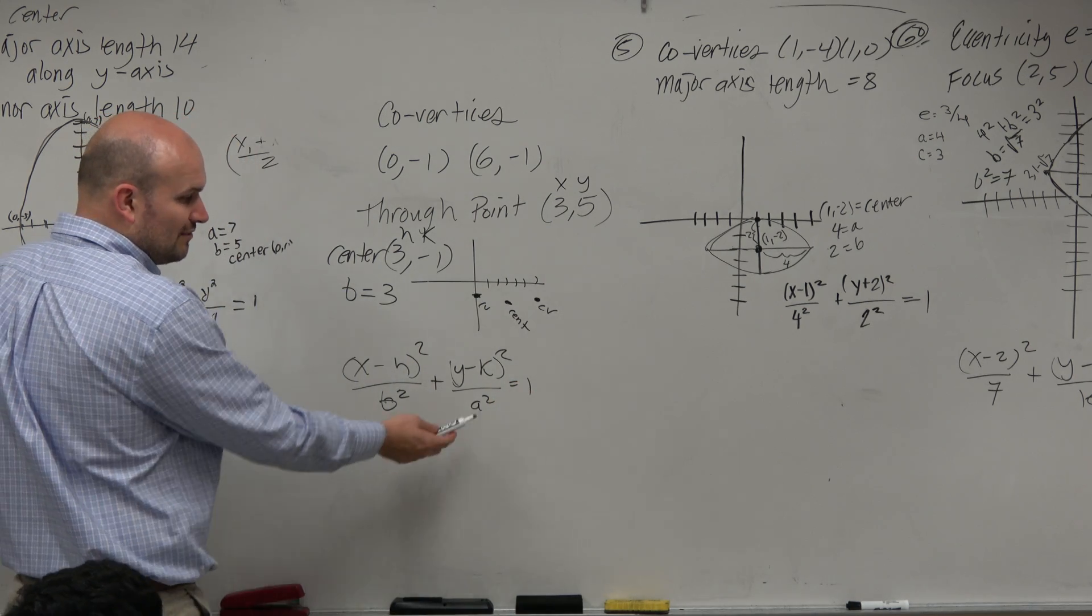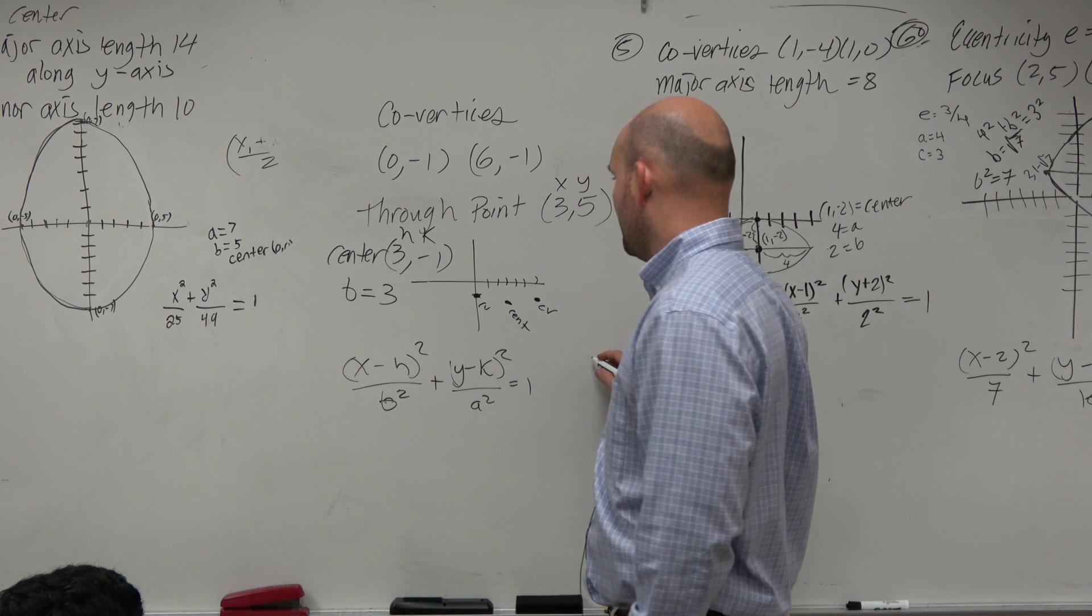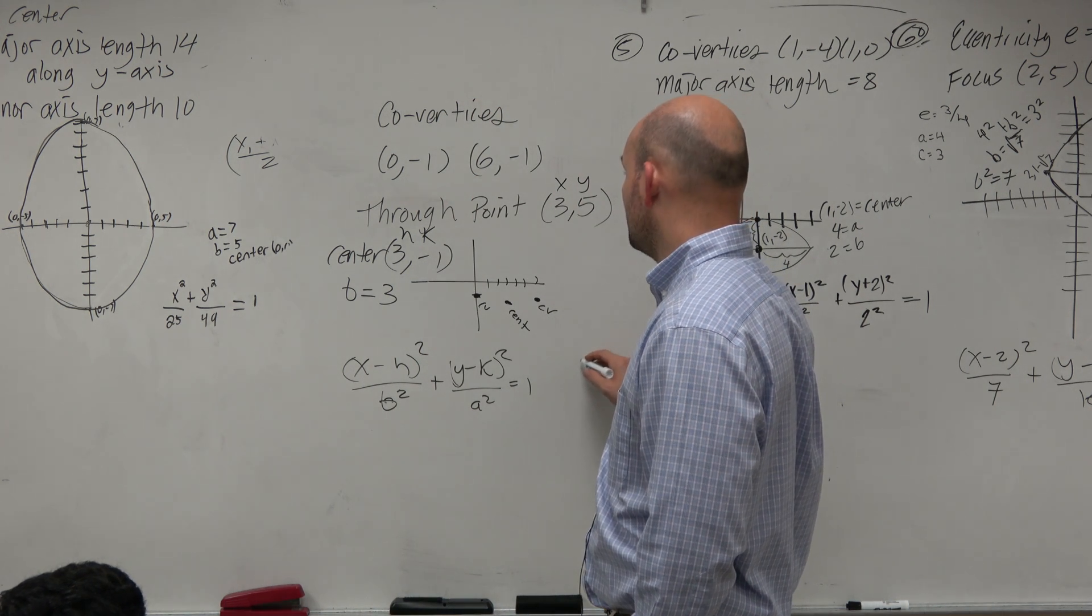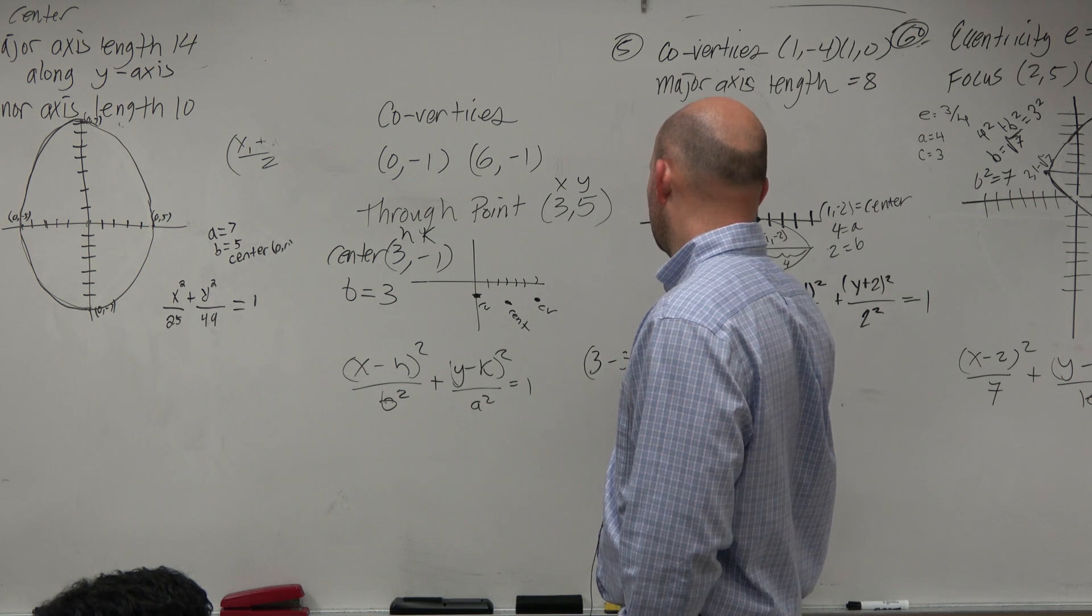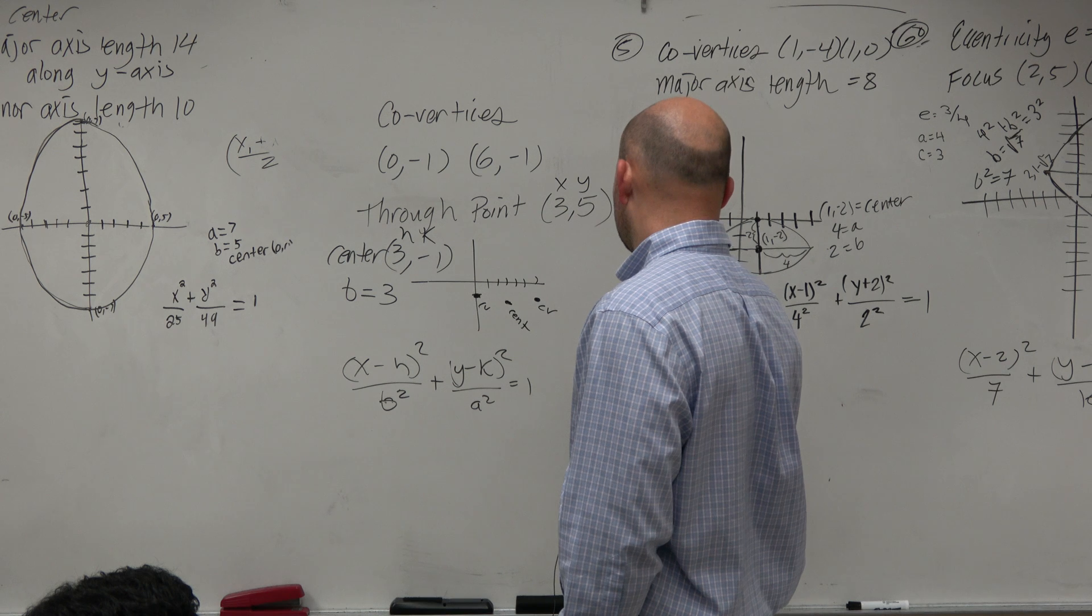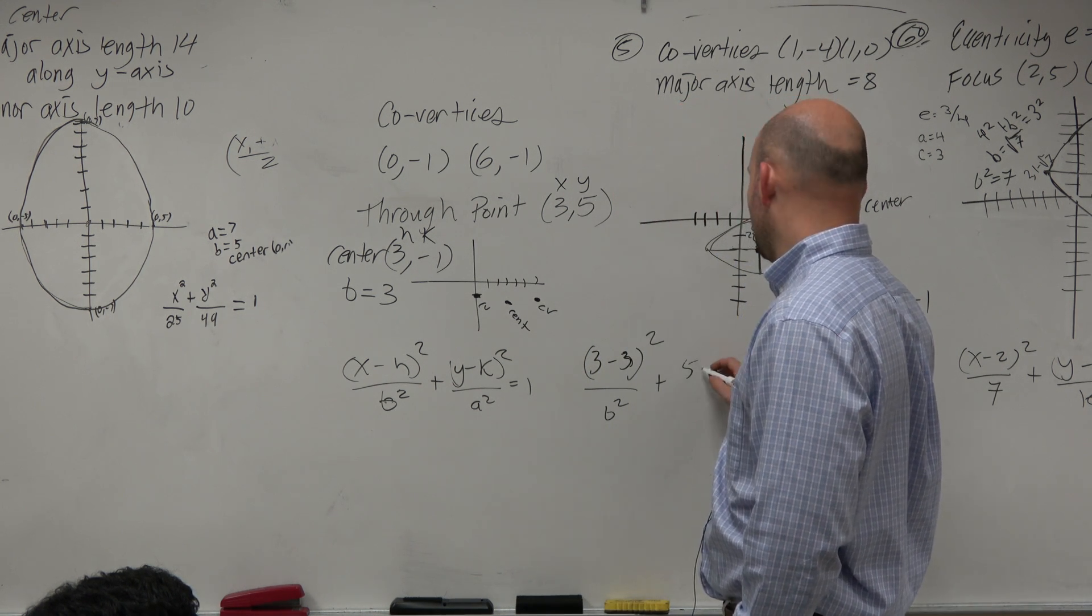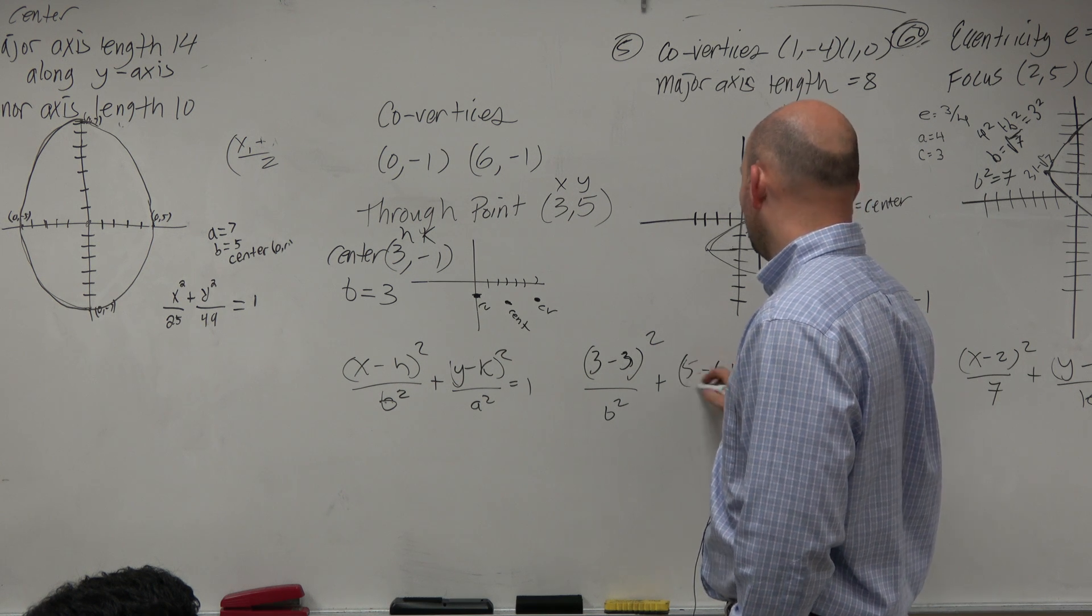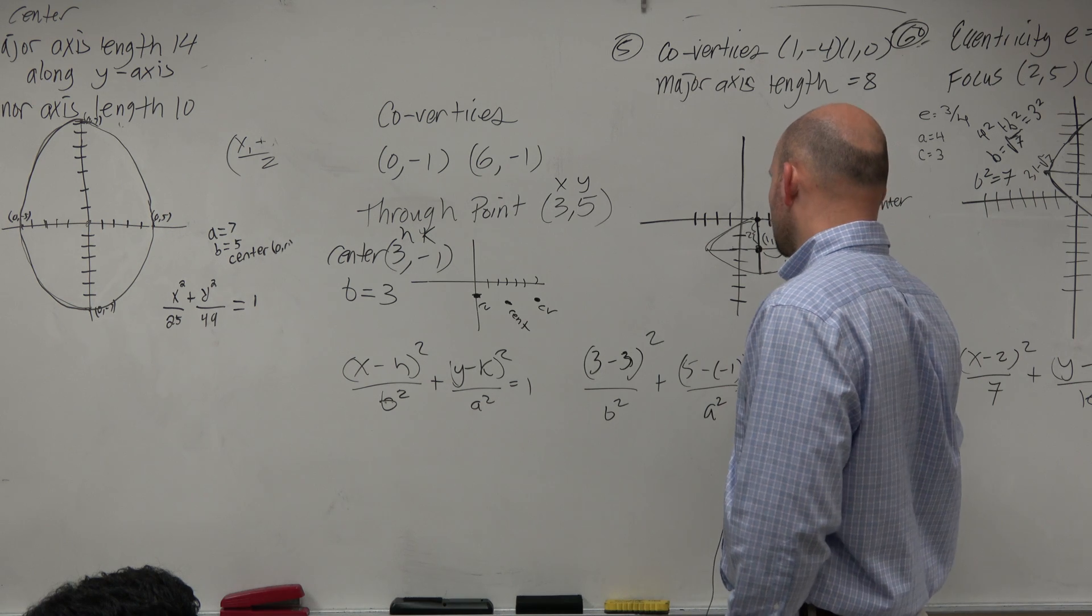And the only thing I don't know that I need is a. So if I plug in everything, my x is going to be 3 minus my h, which is 3, squared, all over b², plus y, which is 5, minus k, minus a negative 1, make sure you're being careful with your parentheses, over a² equals 1.